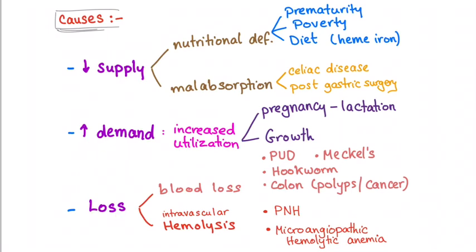Decreased supply includes nutritional deficiency or malabsorption. Nutritional deficiency suggests prematurity — premature babies are at more risk of getting iron deficiency anemia. Poverty and nutritional deficiency, such as not getting enough food or enough minerals, are also contributors.